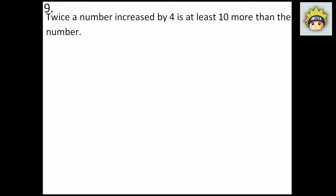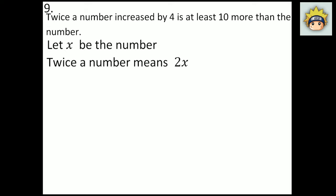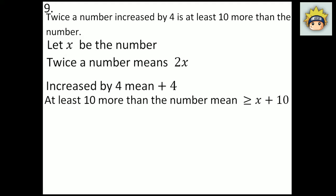Number 9. It says: twice the number increased by 4 is at least 10 more than the number. I'll break it into small pieces. Let x be the number. Twice a number means 2x. Increased by 4 means plus 4. At least means greater than or equal to, and 10 more than the number means x plus 10. So the inequality is 2x plus 4 is greater than or equal to x plus 10. Subtract x from both sides and subtract 4 from both sides, and I get x is greater than 6.